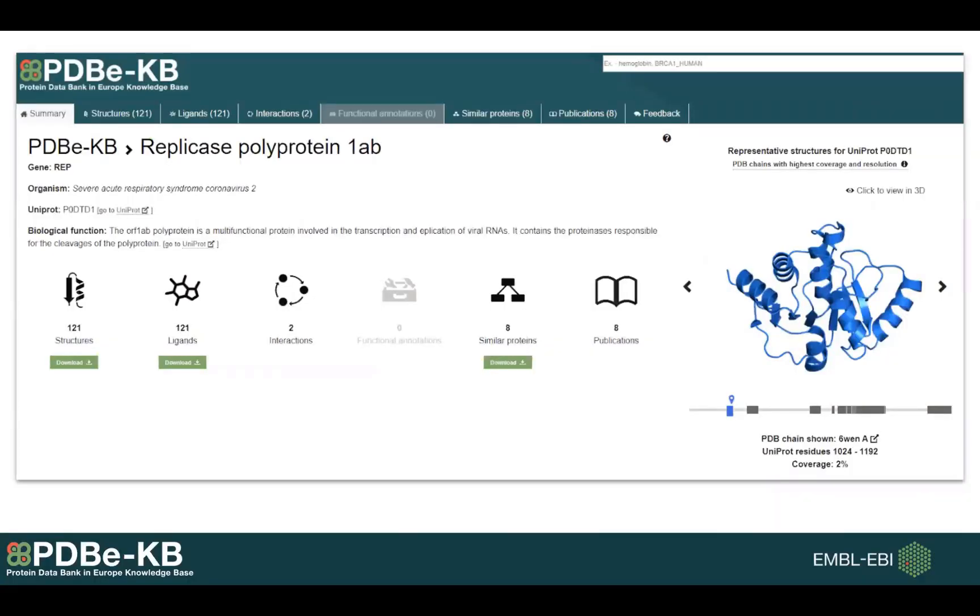This is the example of one of the coronavirus proteins. This is a polyprotein. And as you can see, there are already 121 different PDB entries for this particular protein and also 121 small molecules, as well as 8 different similar proteins.